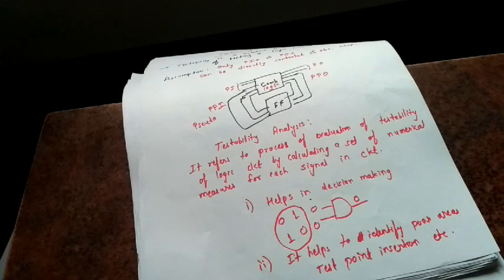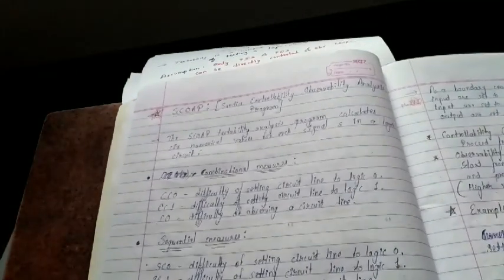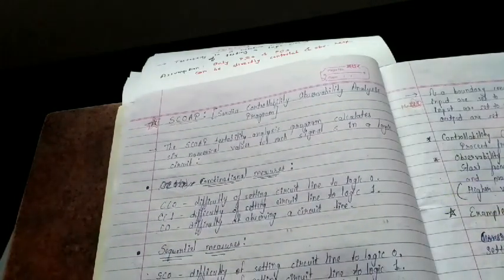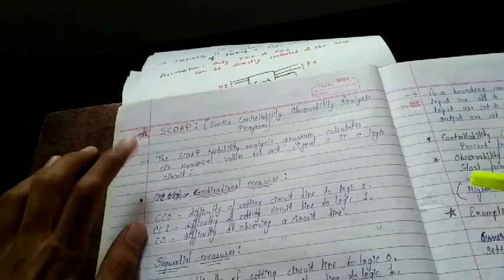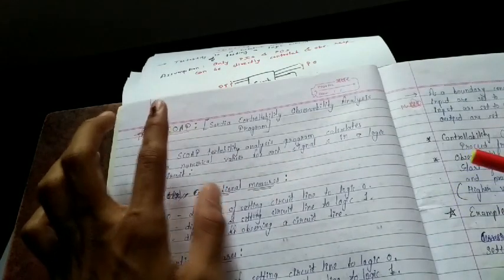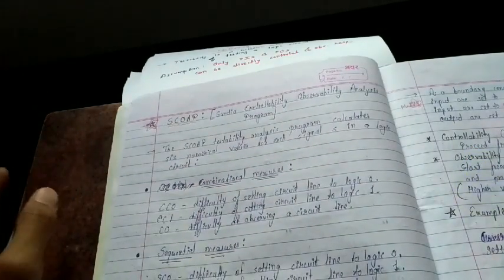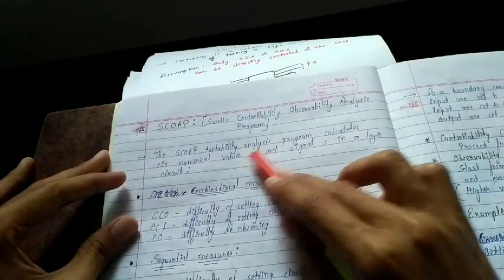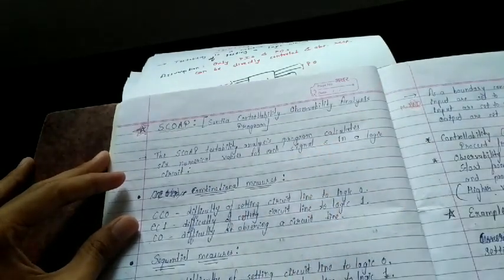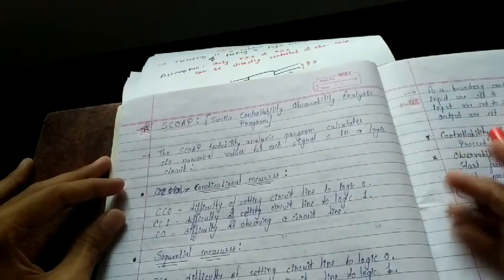The first testability approach is SCOAP — Sandia Controllability Observability Analysis Program — which is a scope-based testability approach. It is an algorithm given by Goldstein, and it calculates six numerical values for each signal in the circuit.